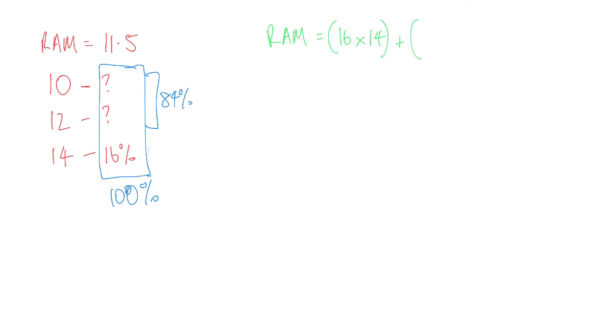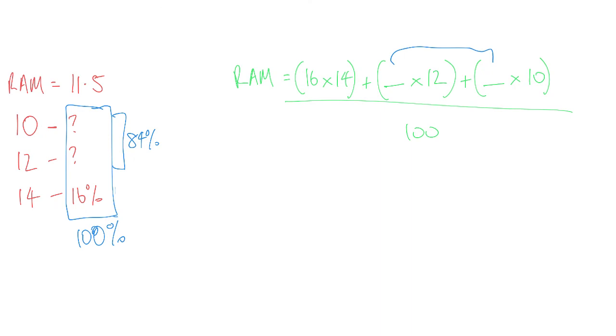So when we do this calculation, we know that there's the 16% times the 14. That's the one that we do know. Then the other two is going to be something times 12 plus something times 10, all over 100. Now those two somethings we know have to add up to 84%. So if we say that one is x, we can say that the other one is 84 subtract x. And so this is why, this is the only reason why you learned how to expand all of those things in your previous years in maths, is to do this calculation.